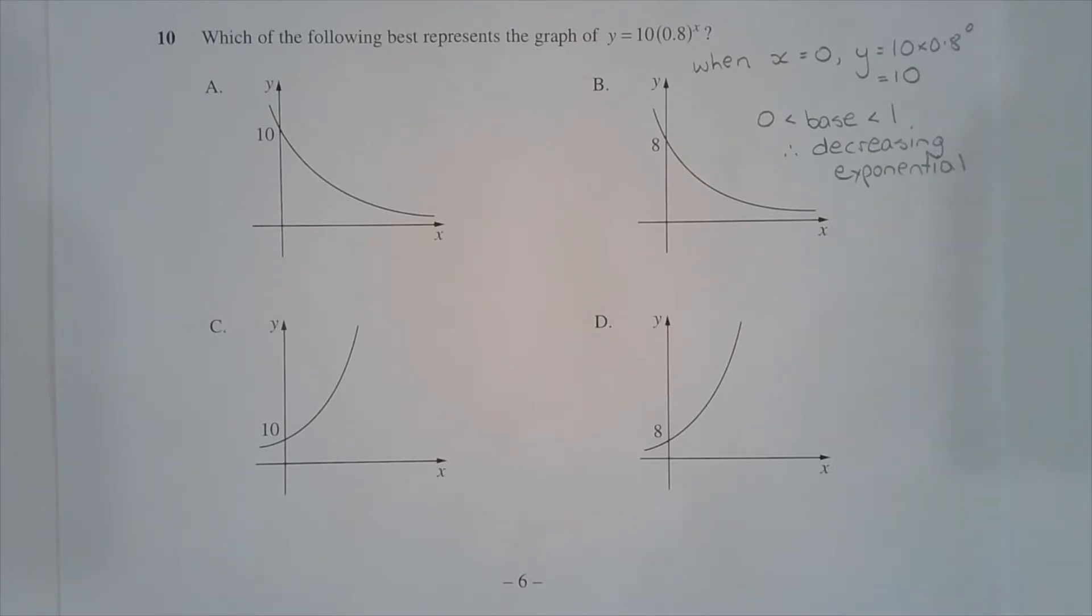Two things to consider. Firstly, the y-intercept. We have a choice of 10 or 8, so to find the y-intercept let x equal 0. When x equals 0, y equals 10 multiplied by 0.8 to the power of 0, and 0.8 to the power of 0 is equal to 1, and that equals 10.